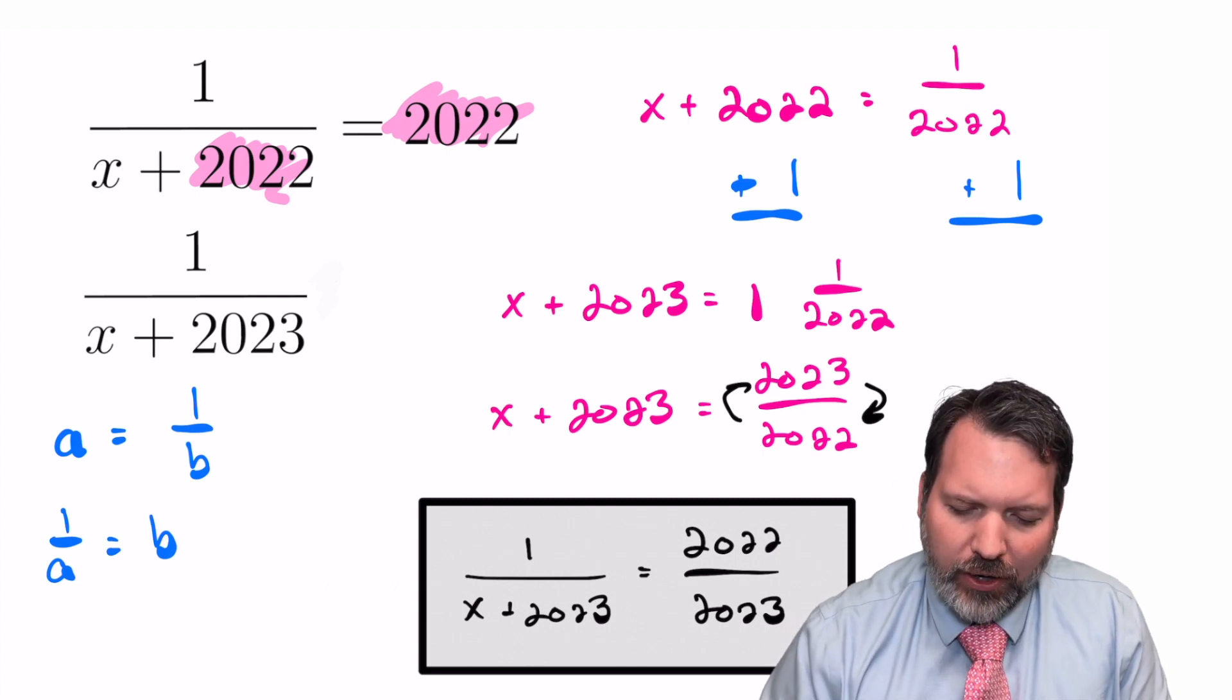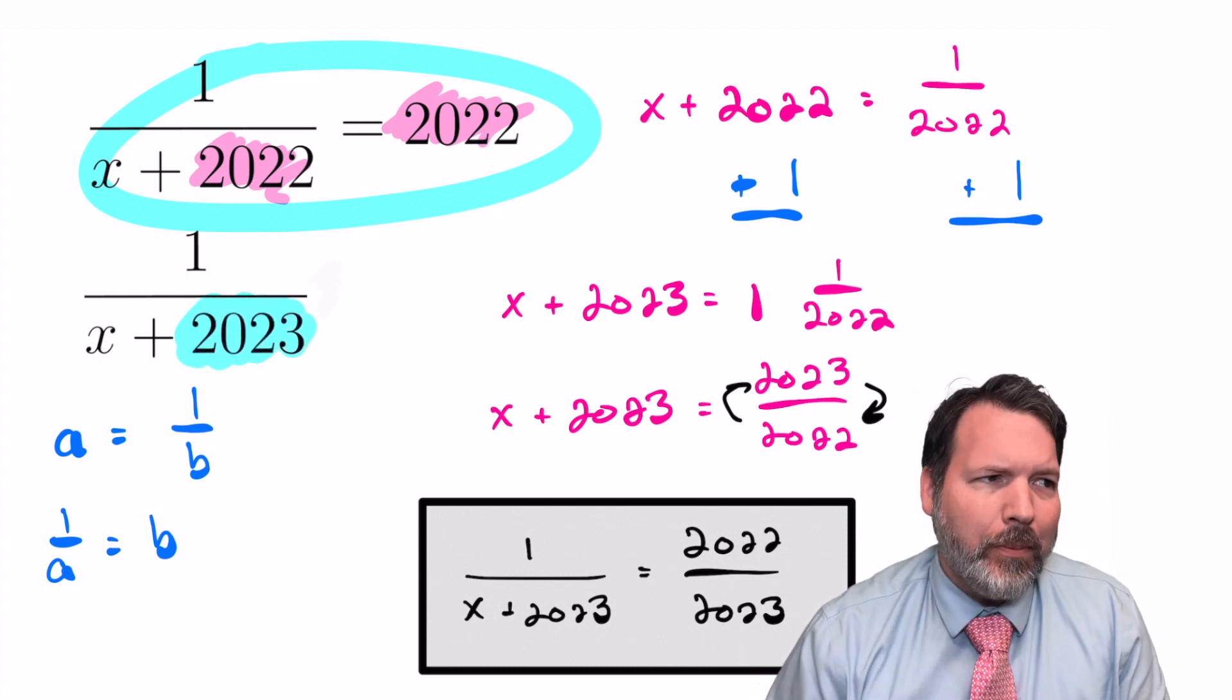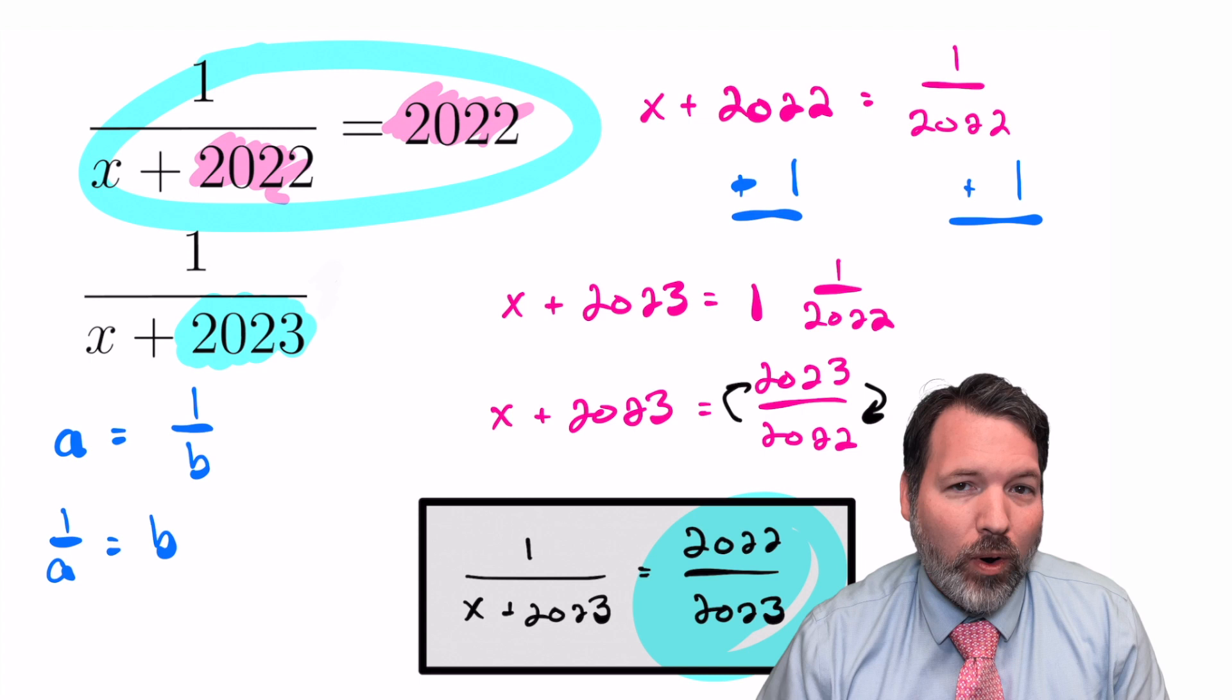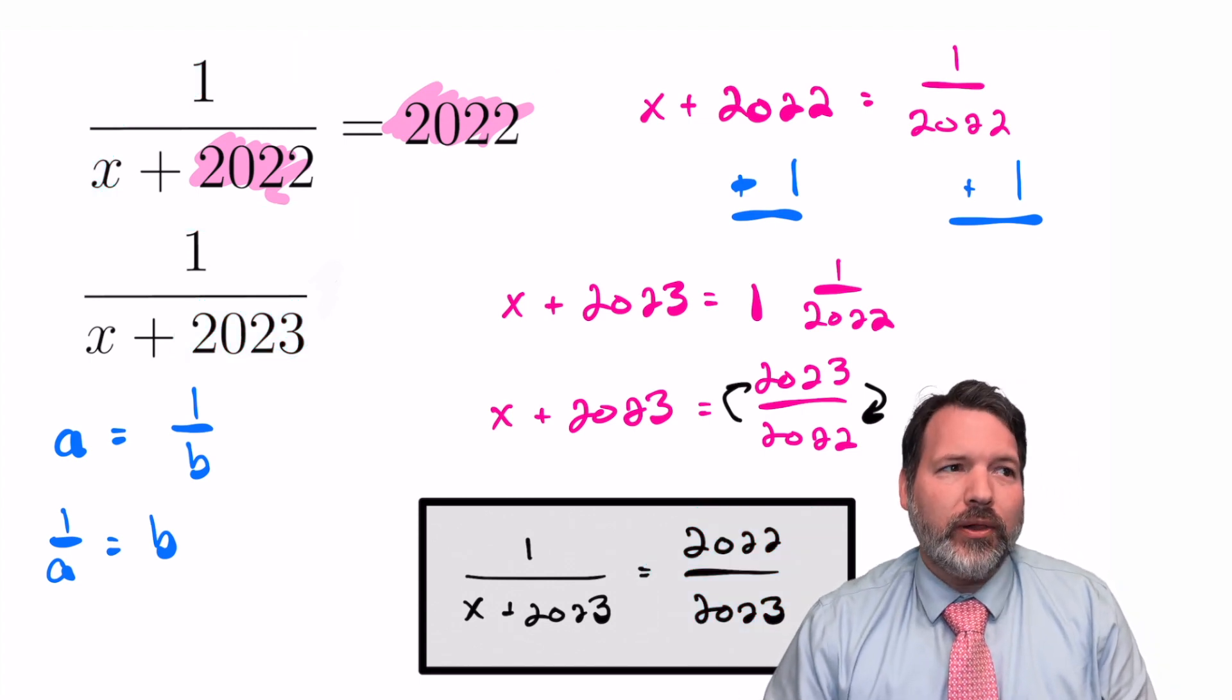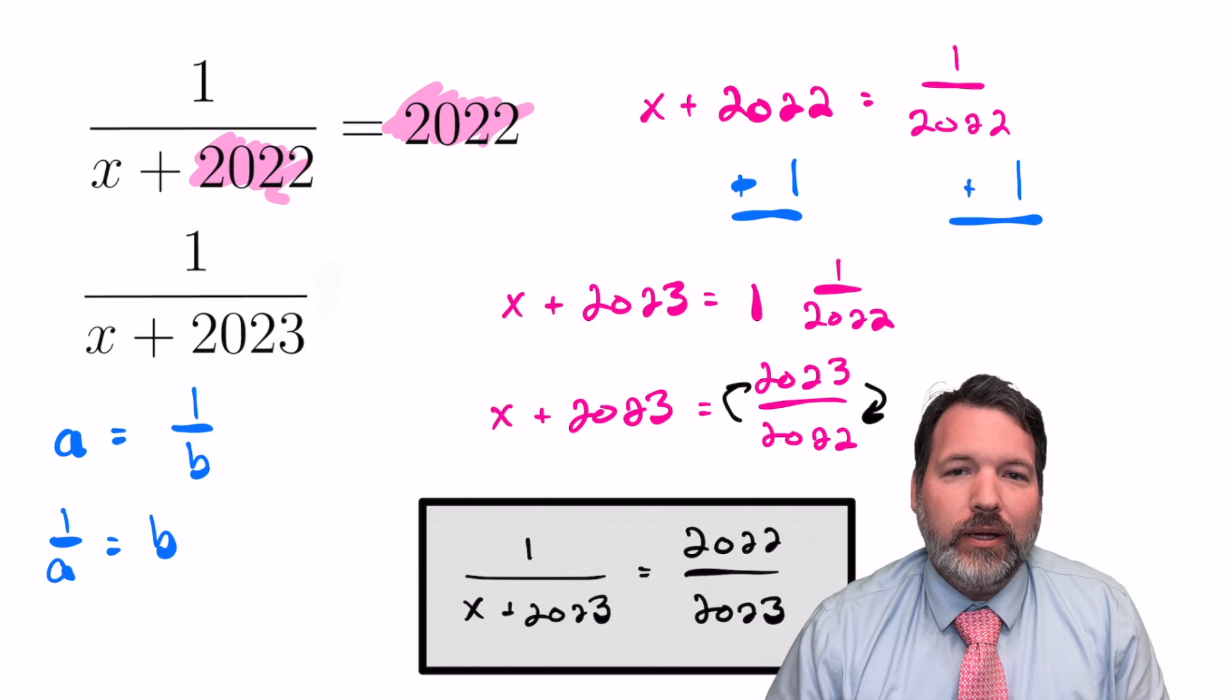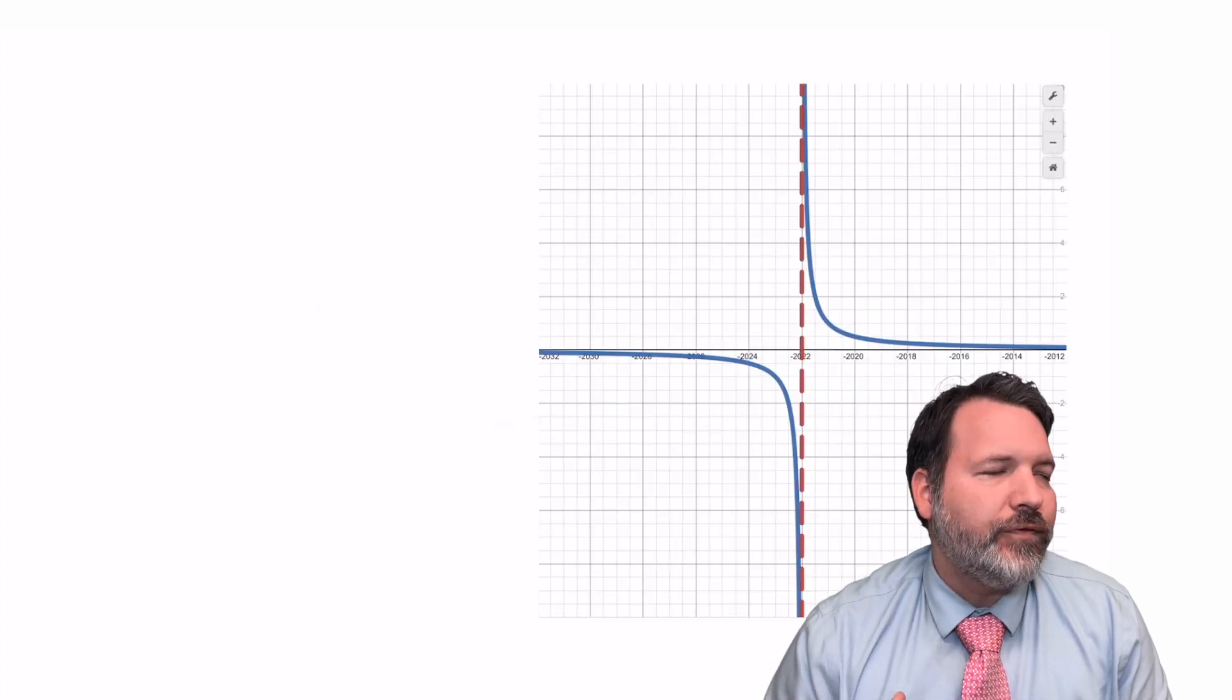Except, hold on a second here. 1 over x plus 2022 was 2022. You're telling me that we can make that number just 1 larger, and the value of the expression drops all the way to something a little bit less than 1? That seems really strange. I know it's supposed to get smaller, but maybe it gets smaller by 1, or maybe it even gets smaller by 99%. It's not going to drop all the way from 2022 to a little bit less than 1, is it?